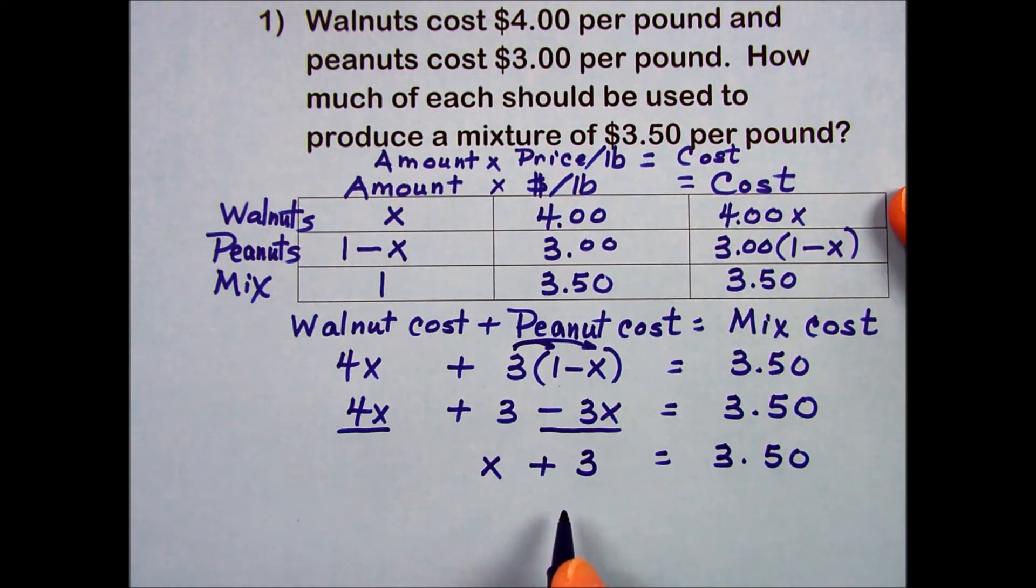The only thing needed to do to get the variable by itself is to subtract a 3 from both sides. x is equal to 0.5, which I can translate that into one-half.